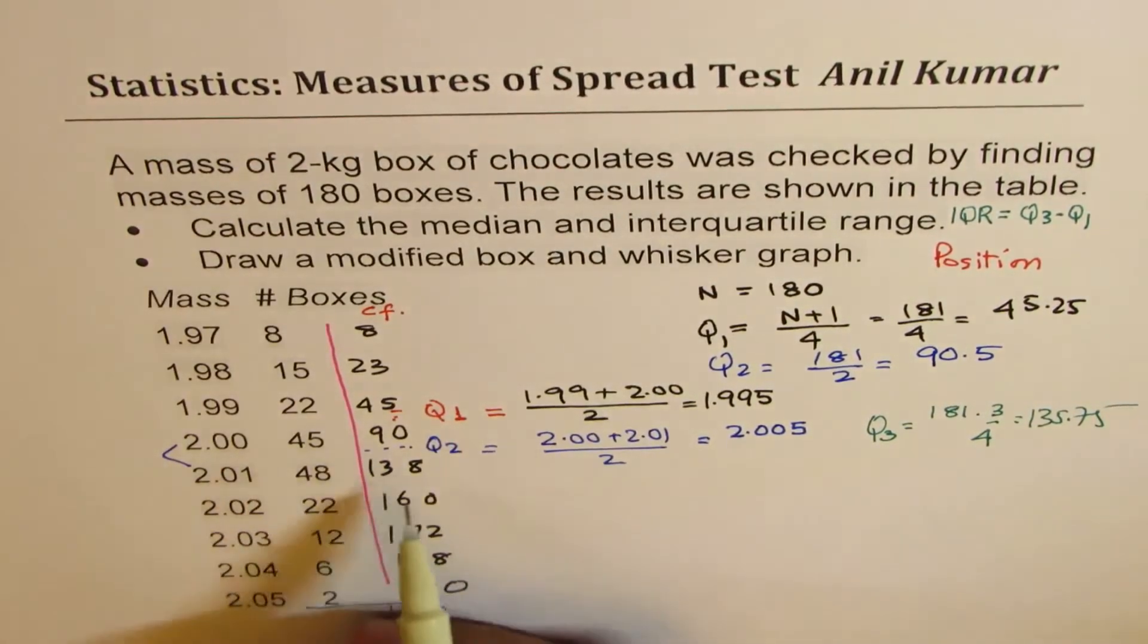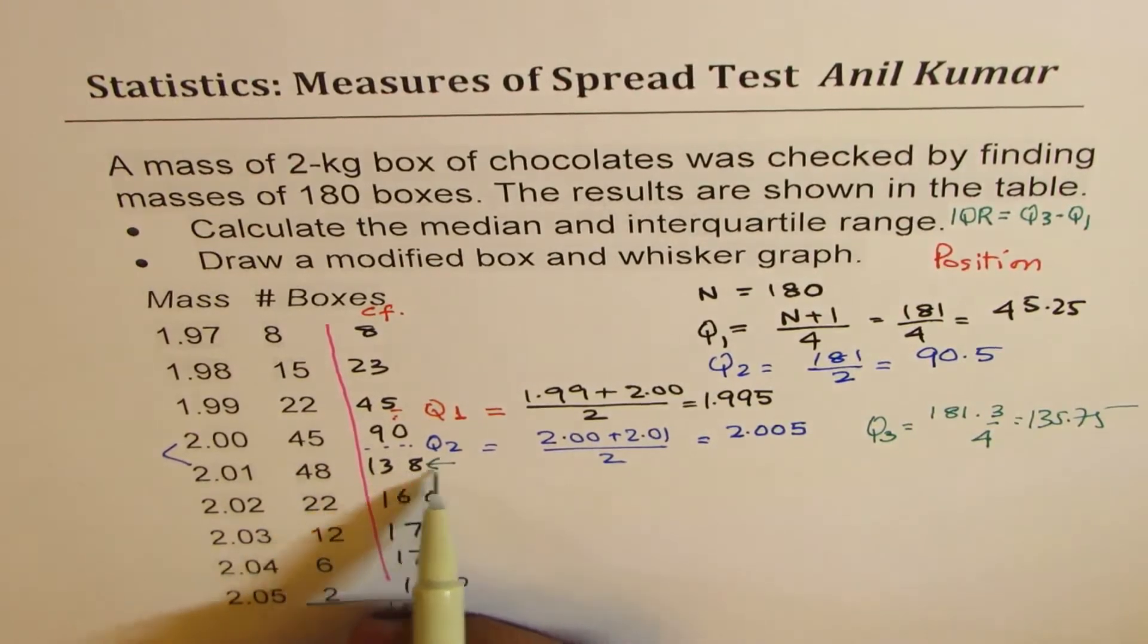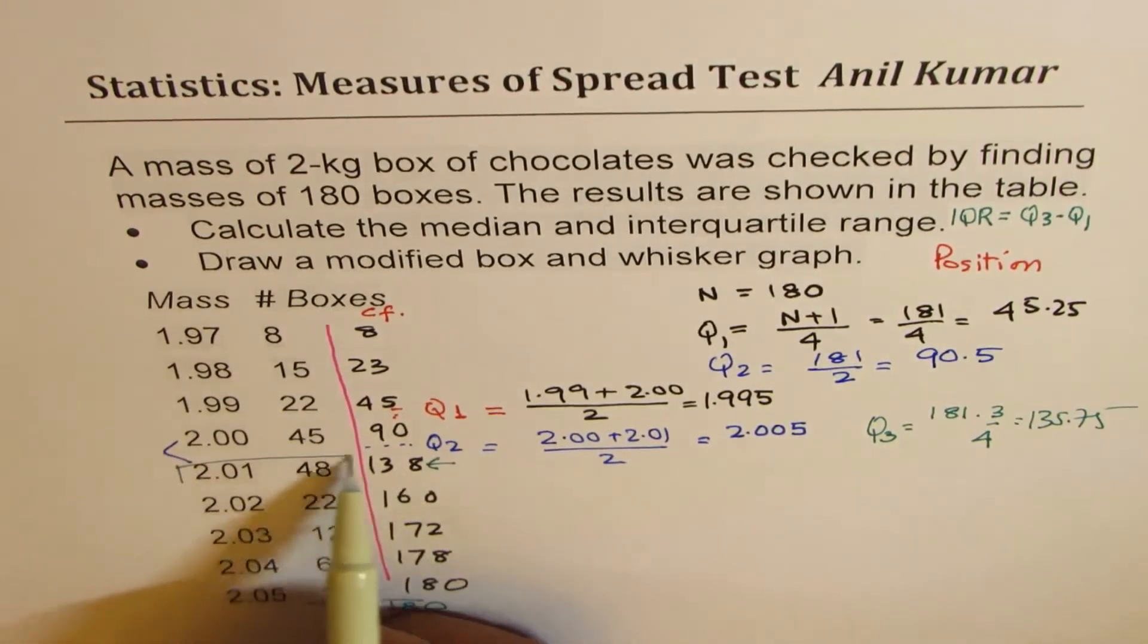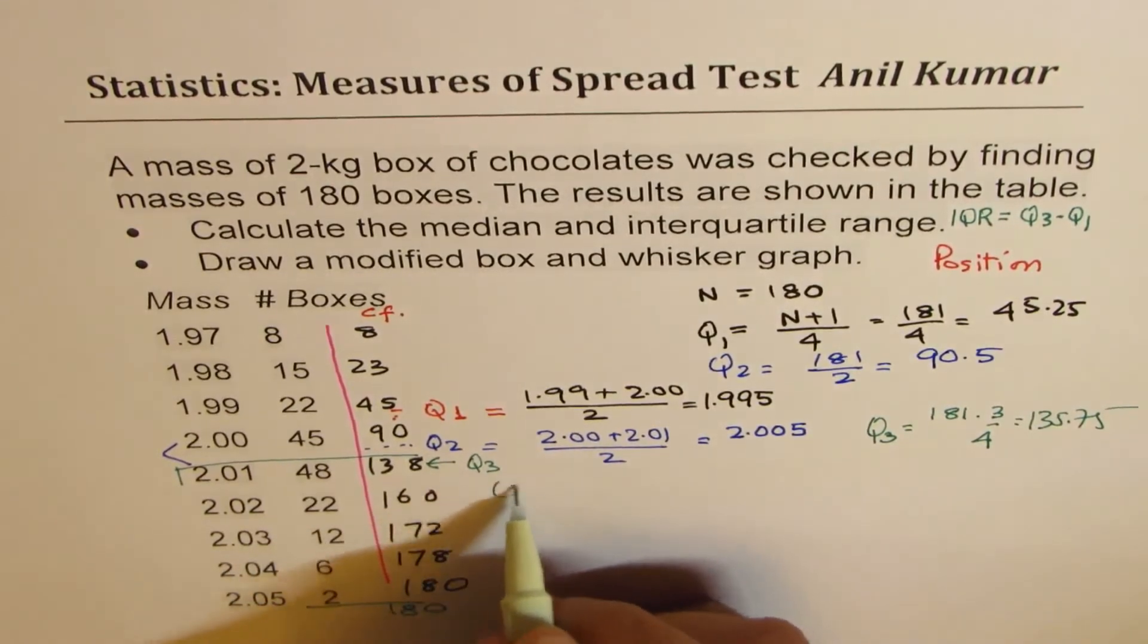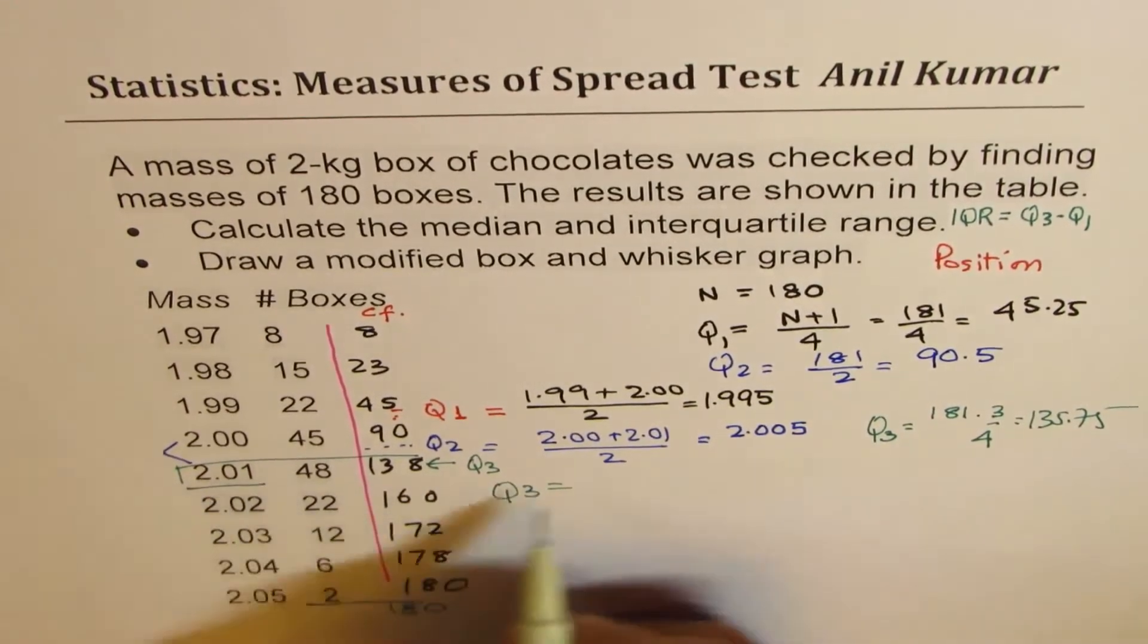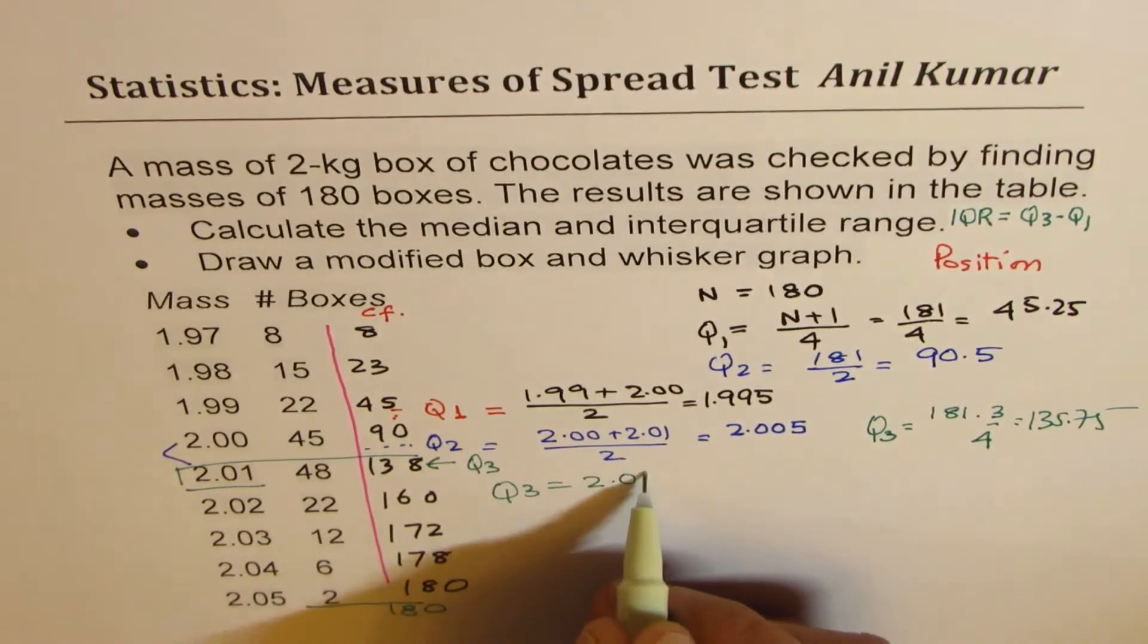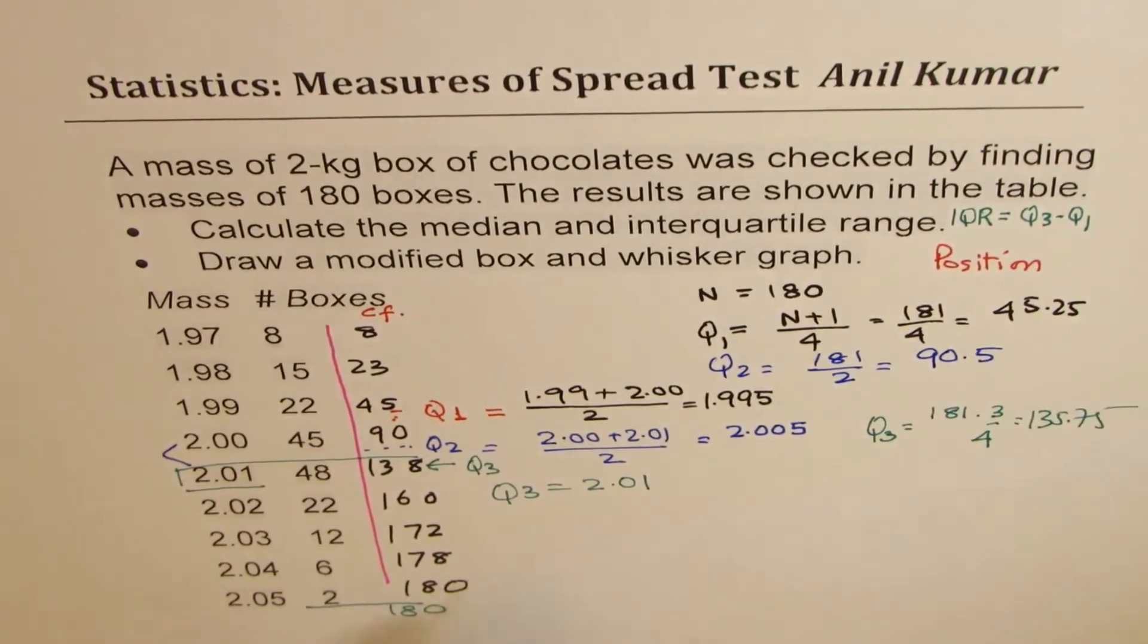Now 135.75 will be in this group, so that is Q3. For Q3 let me rewrite this, value will be 2.01. So that becomes Q3 for us.